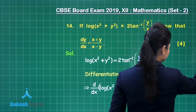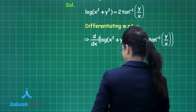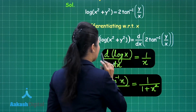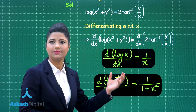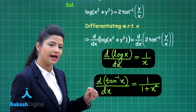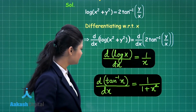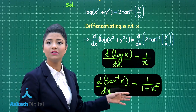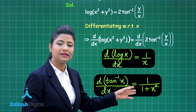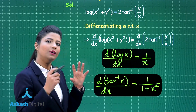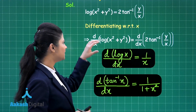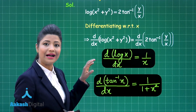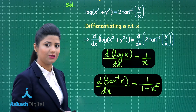You should be aware of these very important formulas: when you differentiate log x, this is equal to 1 by x, and when you find the differentiation of tan inverse x, this is given by 1 upon 1 plus x squared. Using these derivatives we can further differentiate these expressions. Do not forget to write these formulas in your examination.